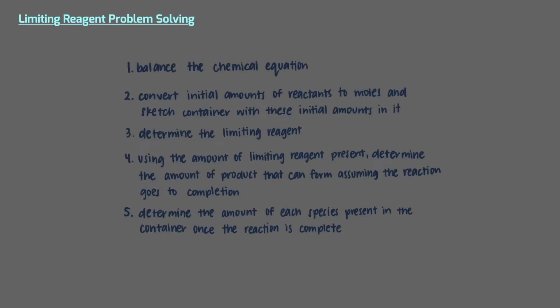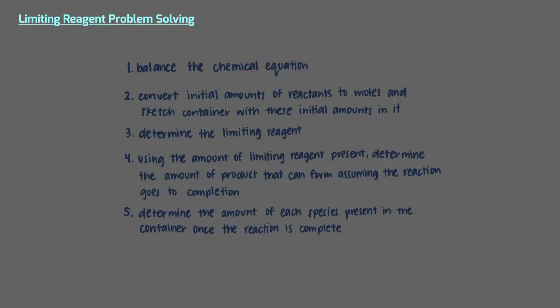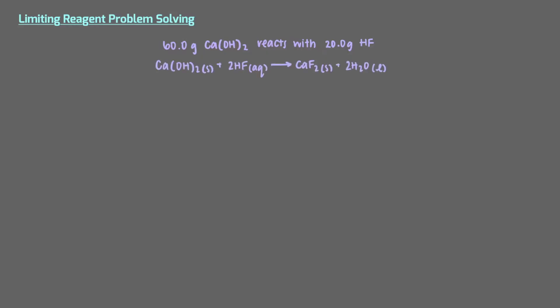We'll follow these steps as we go. Say we mix 60 grams of calcium hydroxide reacting with 20 grams of hydrogen fluoride. A precipitate, calcium fluoride, will be produced along with water. Our goal is to predict the mass of the calcium fluoride product assuming that the reaction goes to completion. We know that we will follow the recipe we discussed in the previous video on limiting reagents, but we first need to build our initial container.